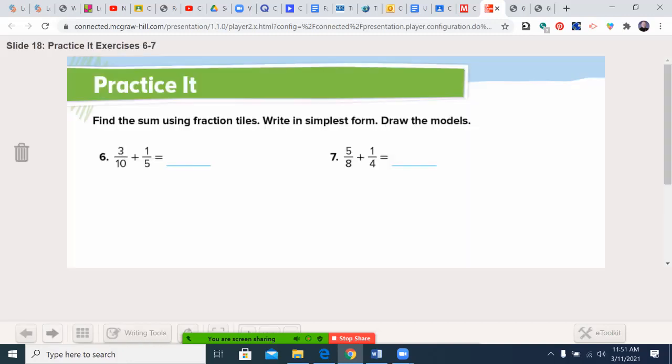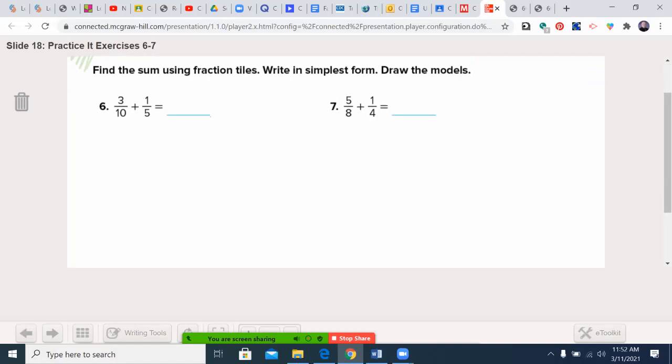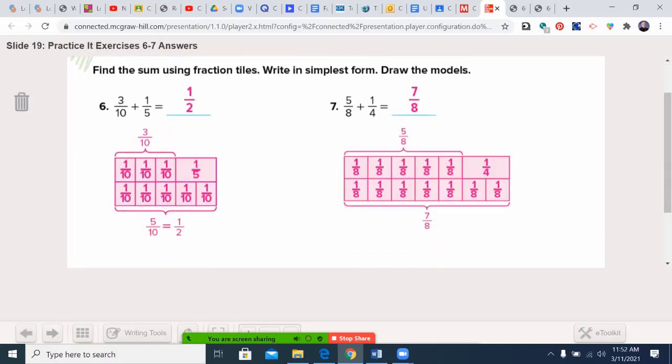Let's go ahead and practice just a couple more, six and seven. You may pause the video now. Welcome back. Let's see how you did. Three-tenths plus one-fifth, which is going to be two-tenths, equals five-tenths, which is simplified down to one-half. These two-eighths equal a quarter, so now we have seven-eighths, and we're good to go.